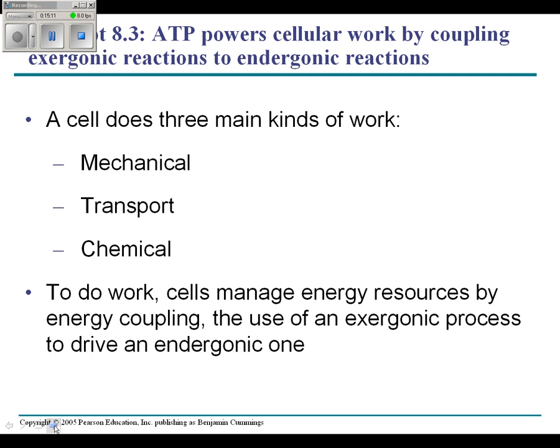Last thing in this. In your cells, we have something called ATP. A cell does three kinds of work: it has to move things, transport things, which is kind of the same thing, move itself, transport things, and do chemical reactions. To do this work, cells manage energy resources by something called energy coupling. They use an exergonic process to make an endergonic one happen. In other words, if we want to build something in our body, we have to have energy put into that system.